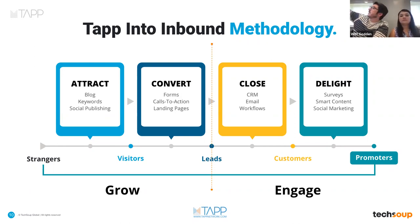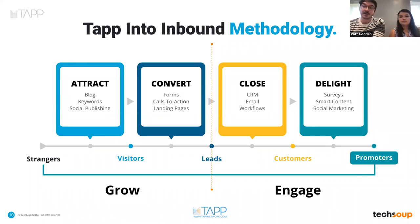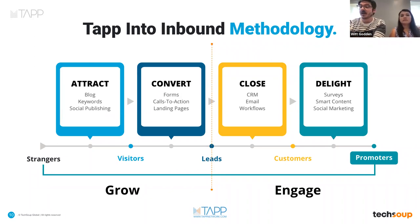You can see that orange dotted line falling through the center here. On the left side we have attract and convert — how do we grow those prospective individuals' interests. On the right side we have close and delight — they've made some semblance of a conversion, saying I'm interested in participating, in volunteering, in donating. This methodology also works for identifying prospective users of services your nonprofit provides, not just for revenue or donor engagement. The first part of the presentation will focus on different ways to attract and convert individuals.